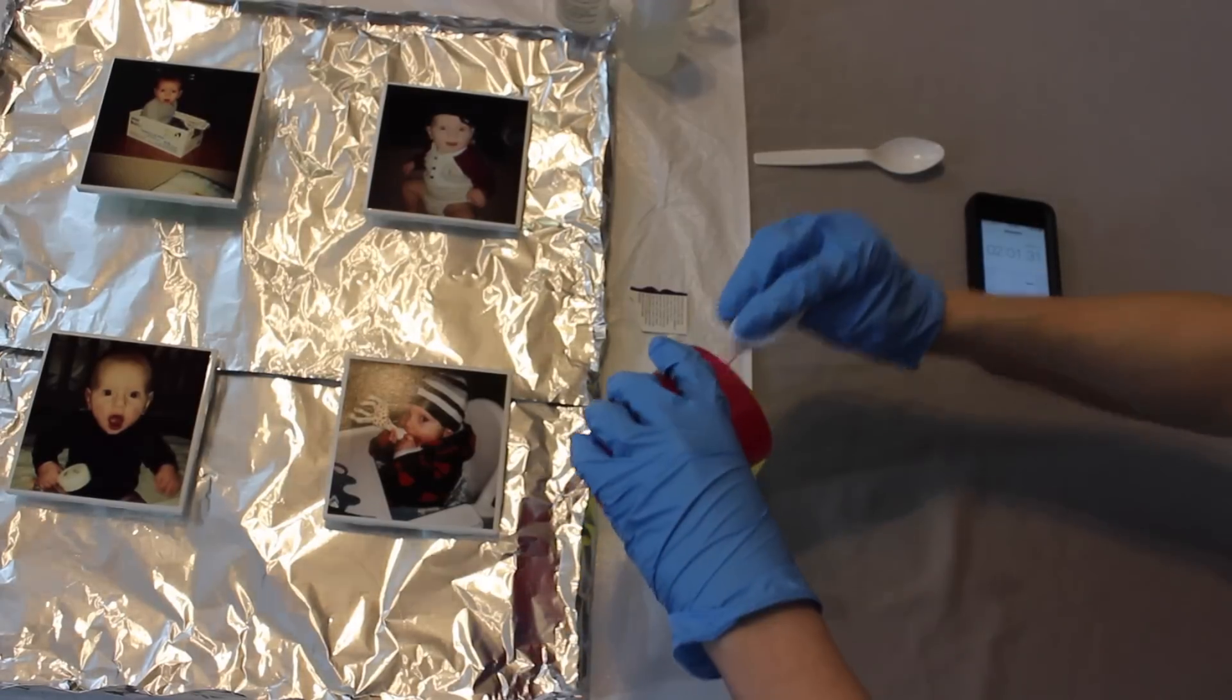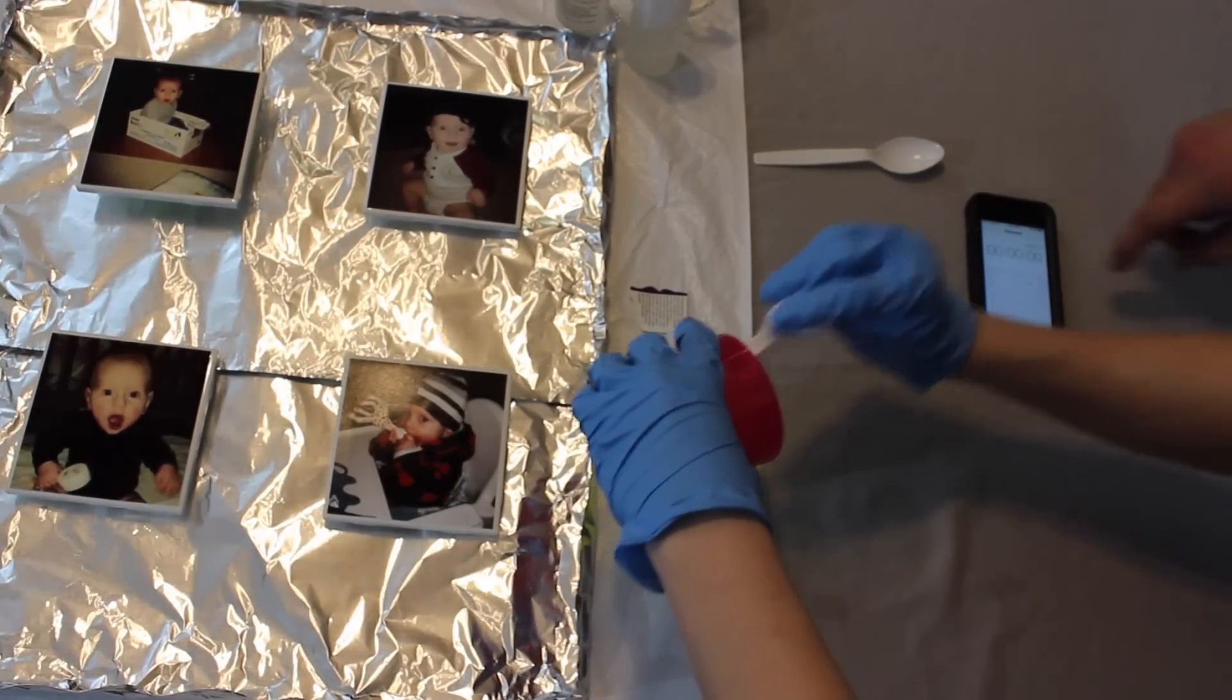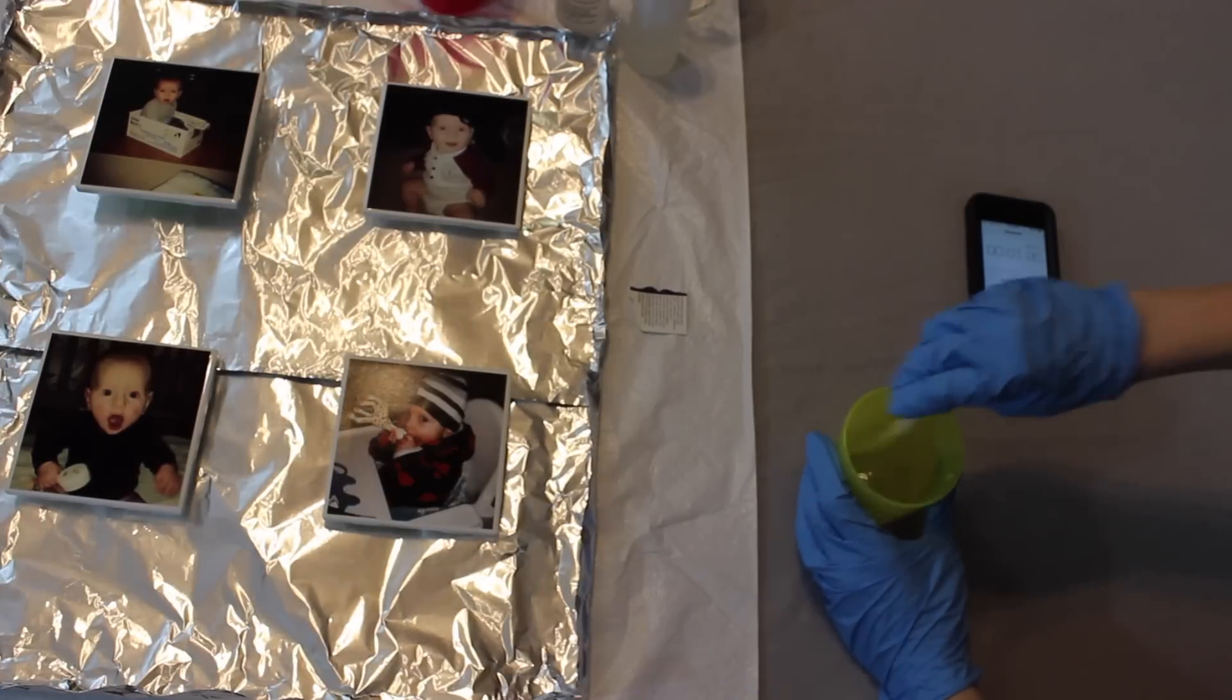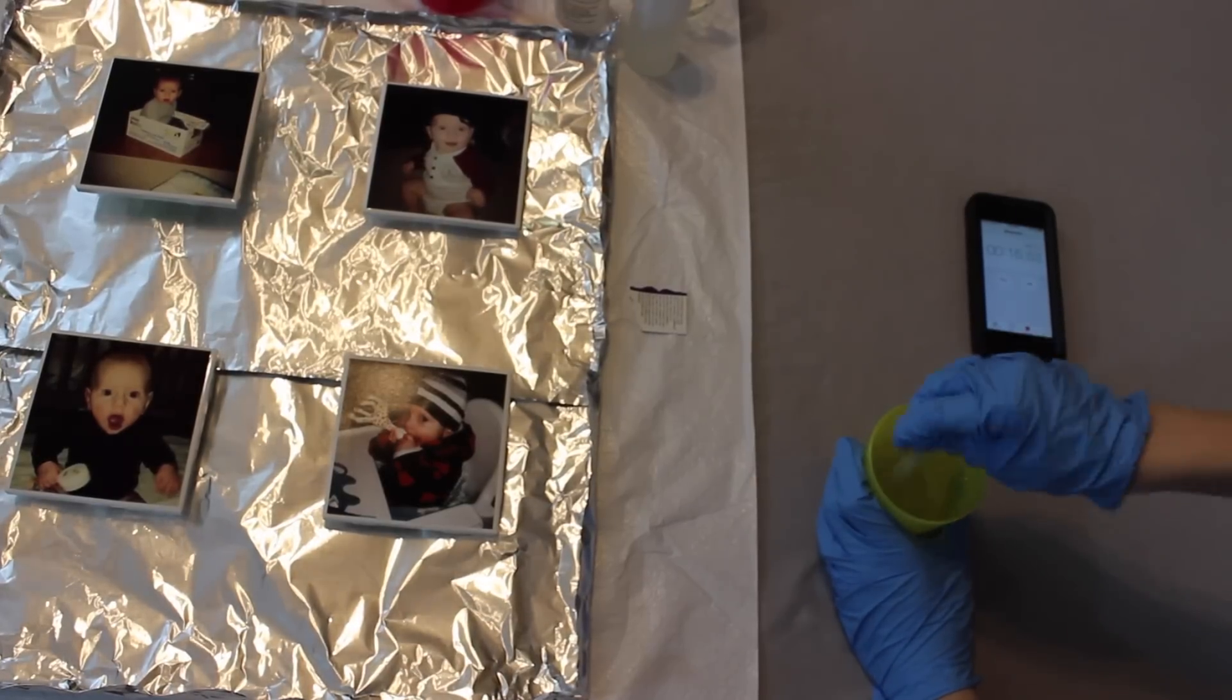Next, you're going to pour your concoction into another glass. Now this time you're going to use a brand new stirring stick. This is in the instructions and they say that it is very important to do this, so definitely do it. You're going to do this step for exactly 1 minute.